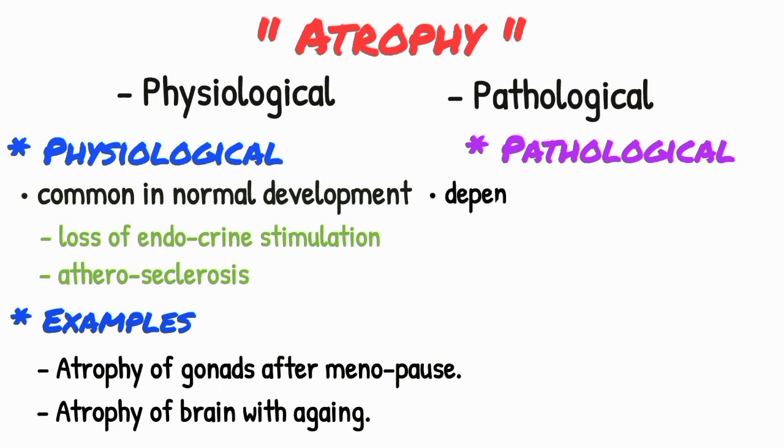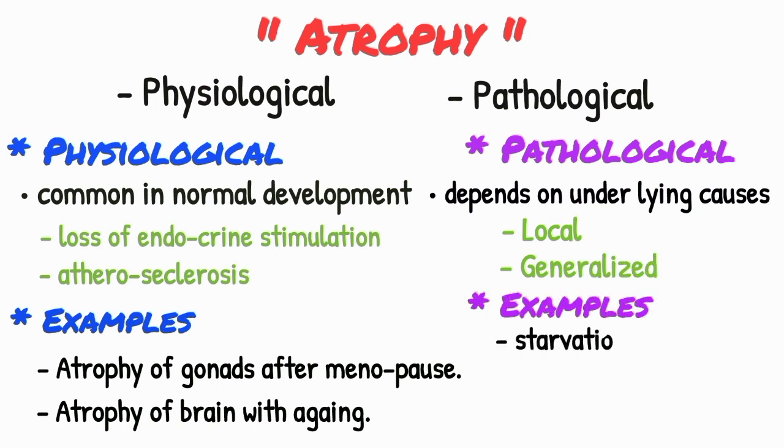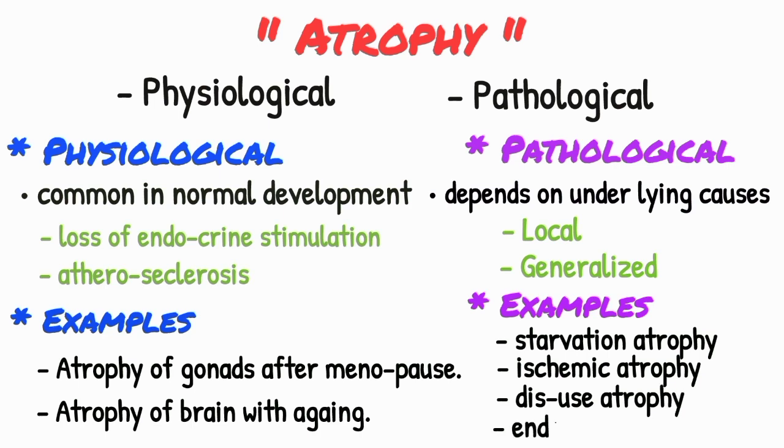Pathological atrophy depends on underlying causes and can be local or generalized, which includes starvation atrophy, ischemic atrophy, disuse atrophy, endocrine atrophy, and idiopathic atrophy.